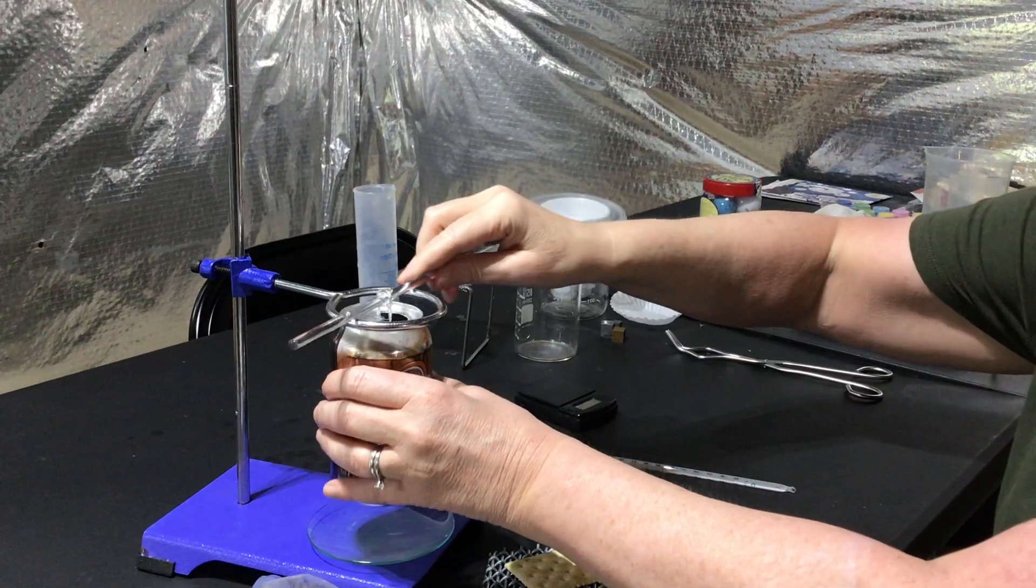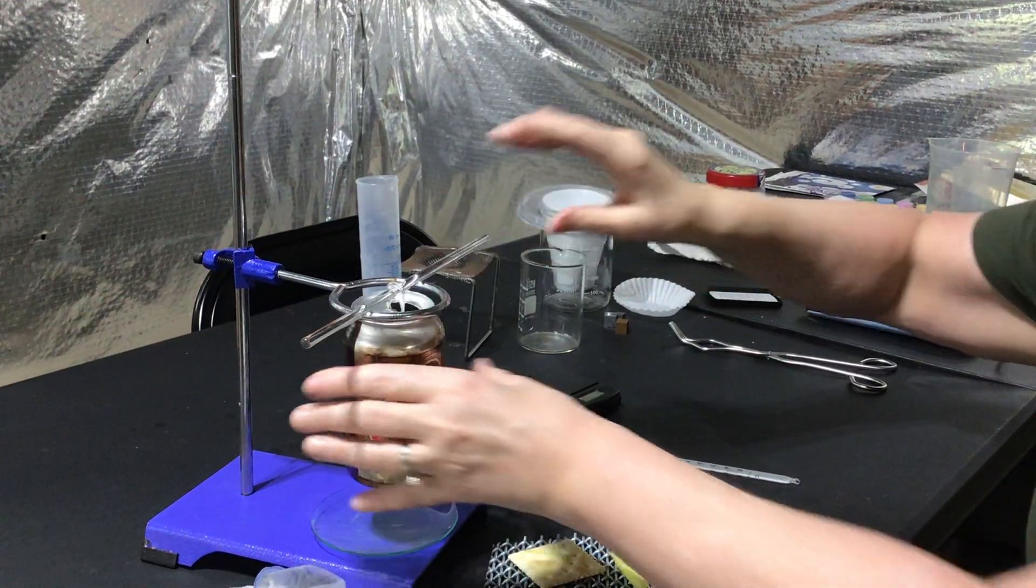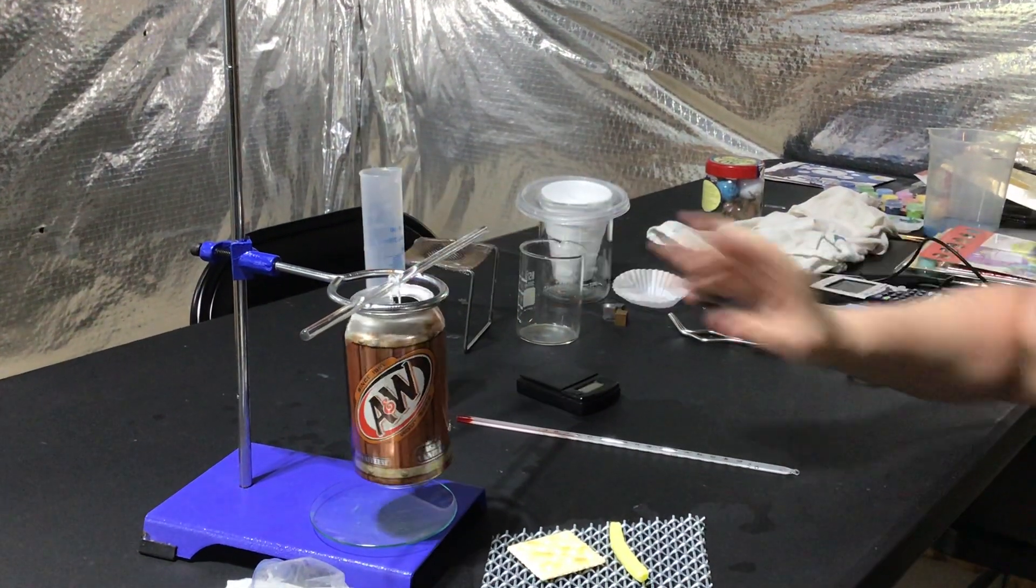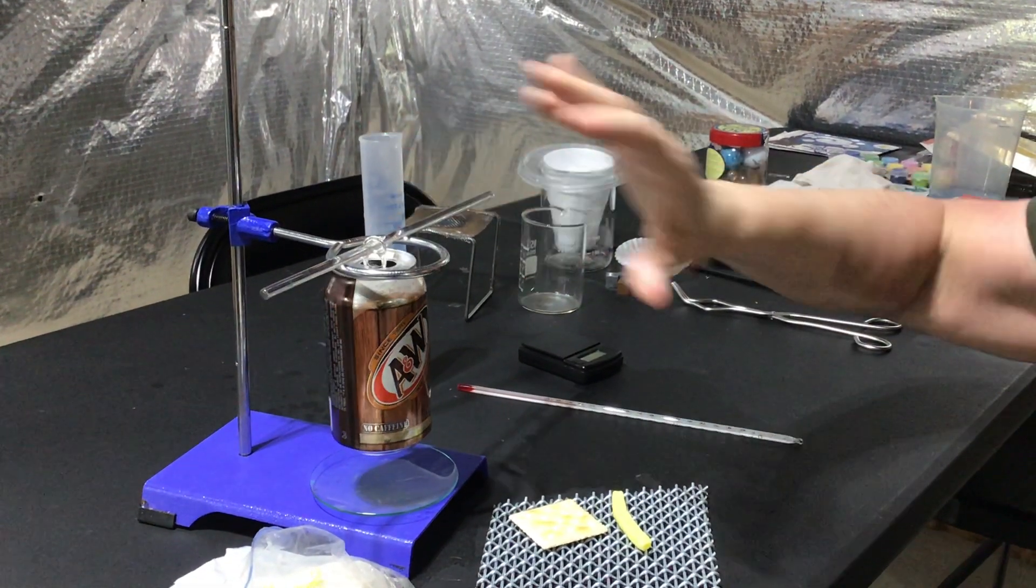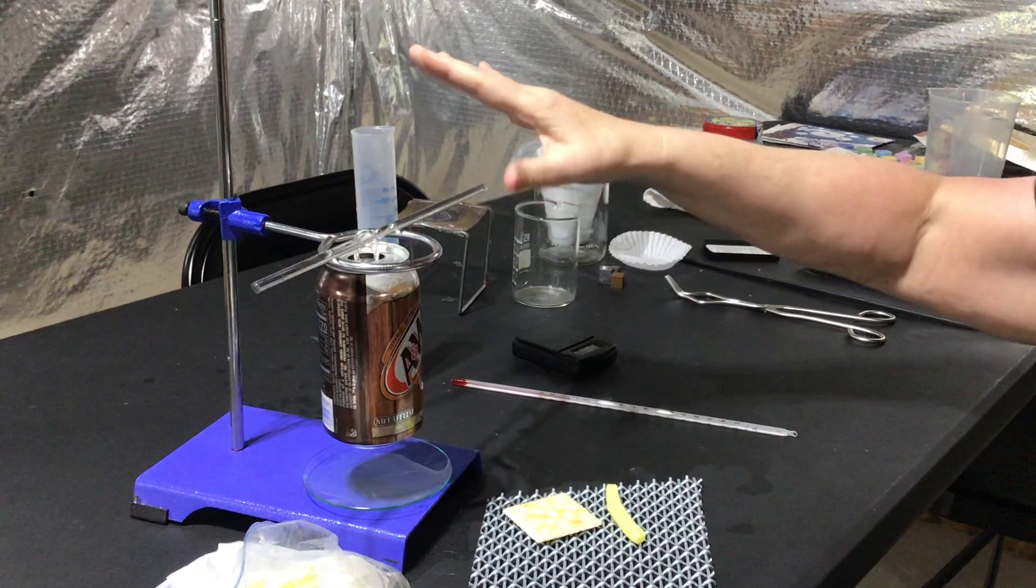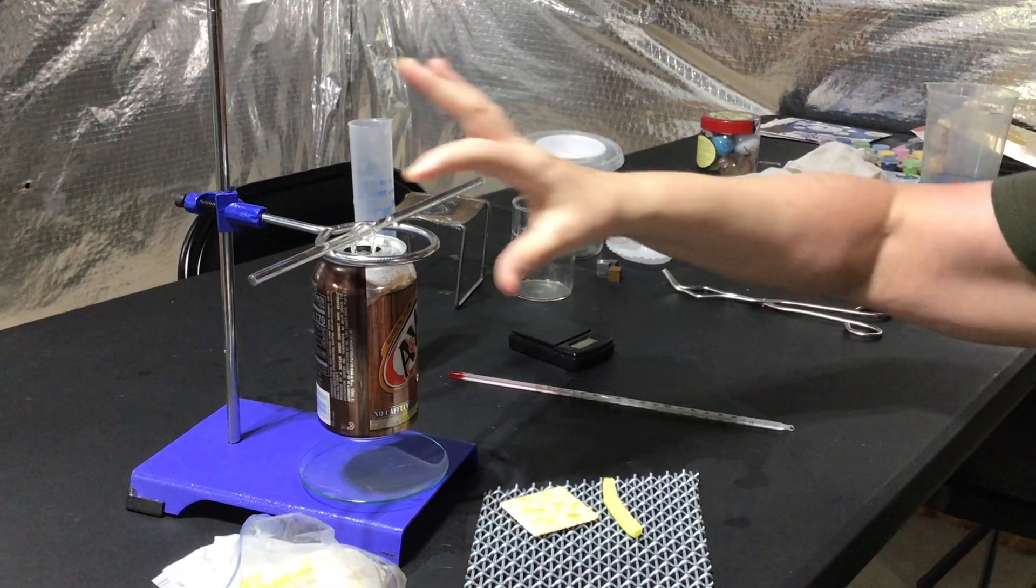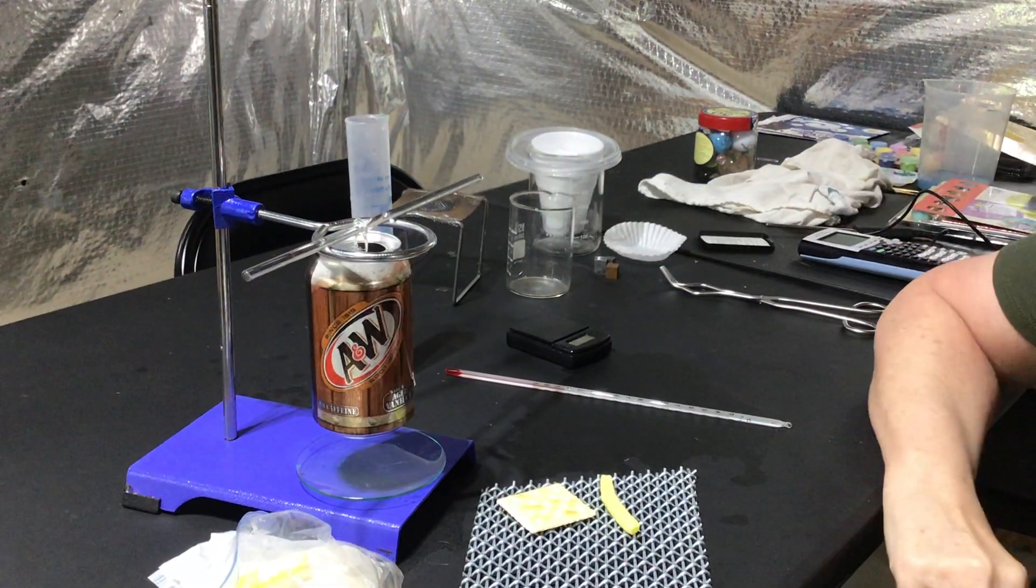So first set up this soda can calorimeter and then make sure you have your water in here. Have extra cans because these can slip off. It's another problem. There's too much weight. Of course, it's going to snap. So have a few extra in case this snaps.